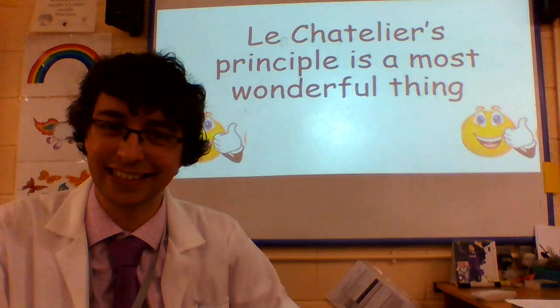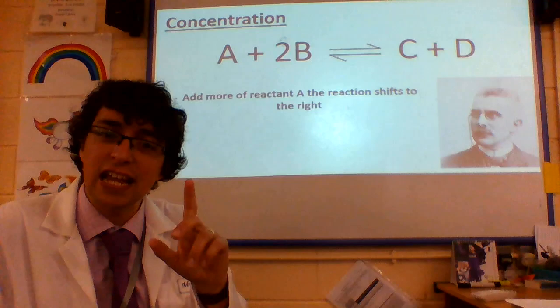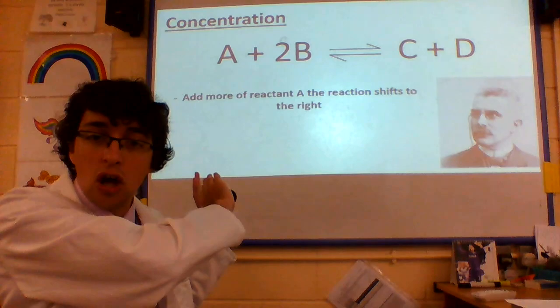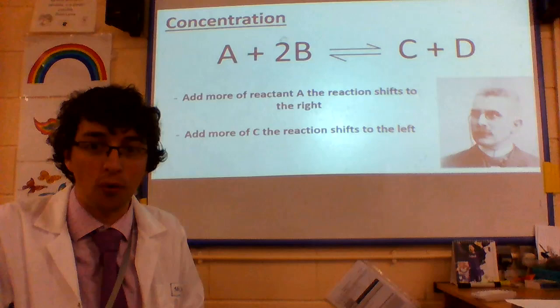Let's look at an example of this. Here's our reversible reaction: A plus 2B — there's the symbol for a reversible reaction — we're making C and D. So it's a backwards and forwards thing. If I were to increase the concentration of A, now it's not balanced, so it pushes the whole reaction forward, to the right. If I increase C, it would shift back to the left. It's keeping things in balance — very important.